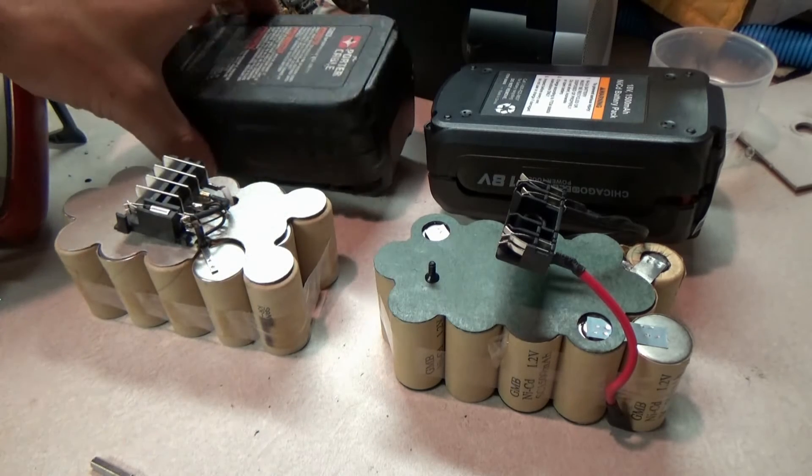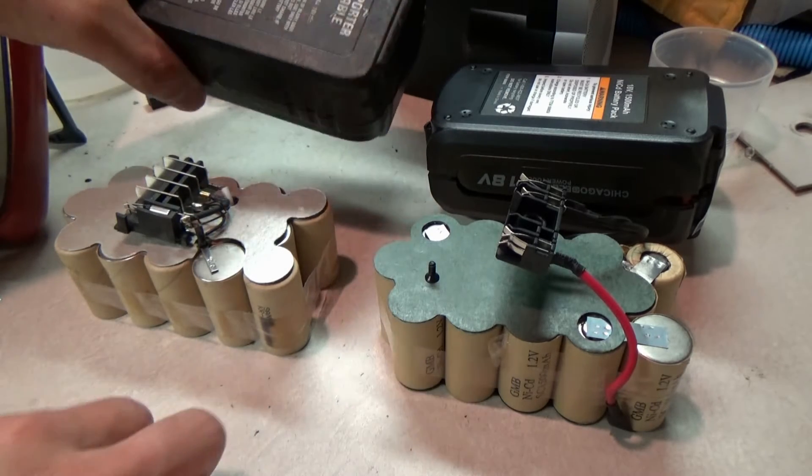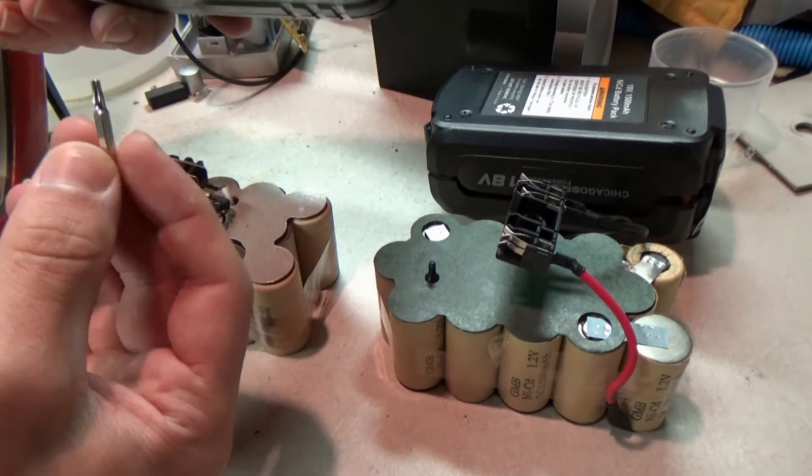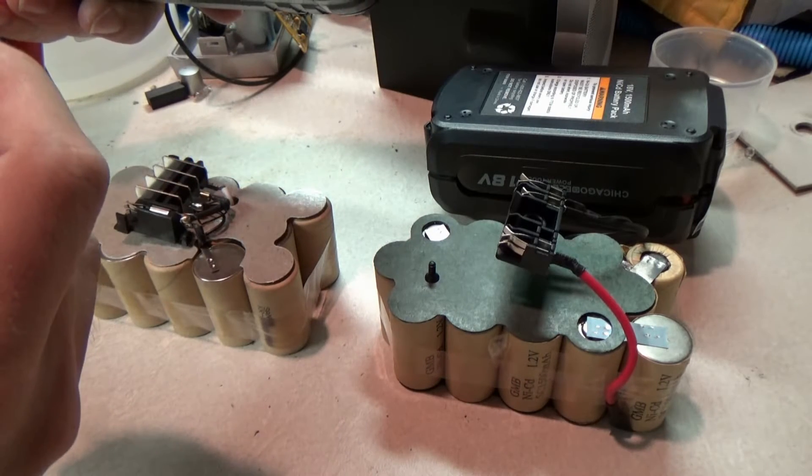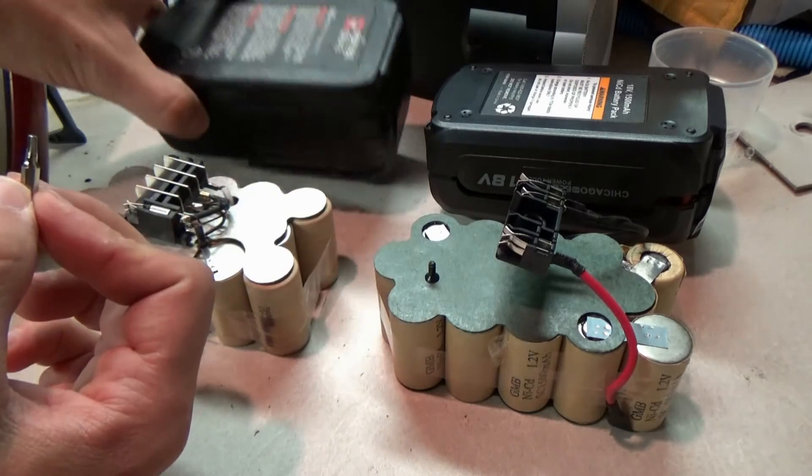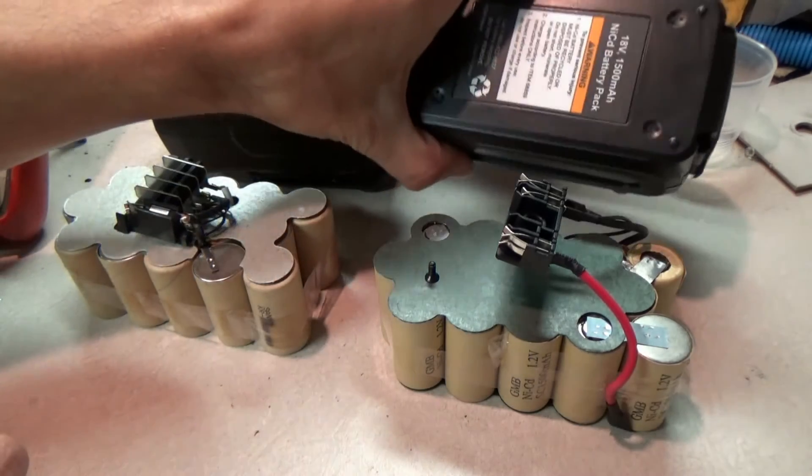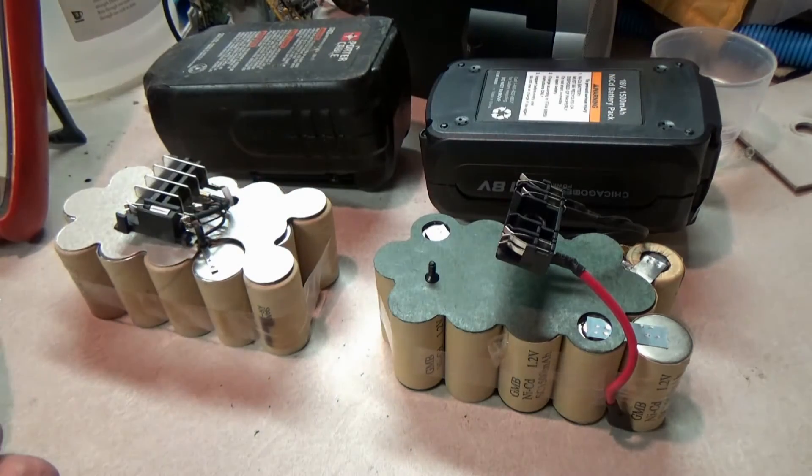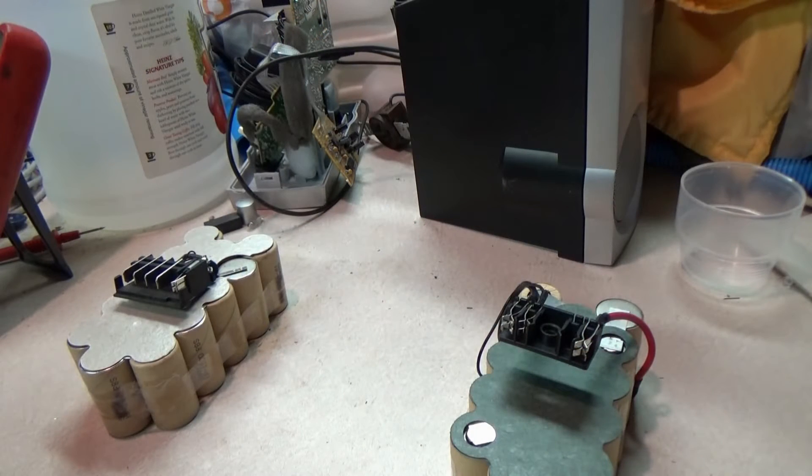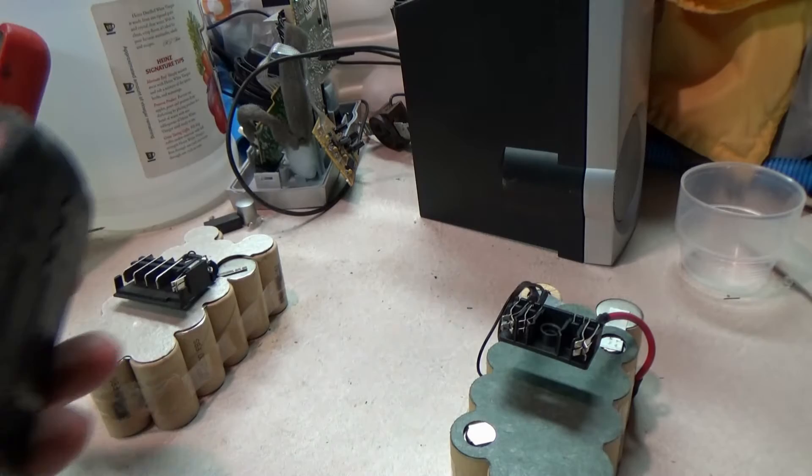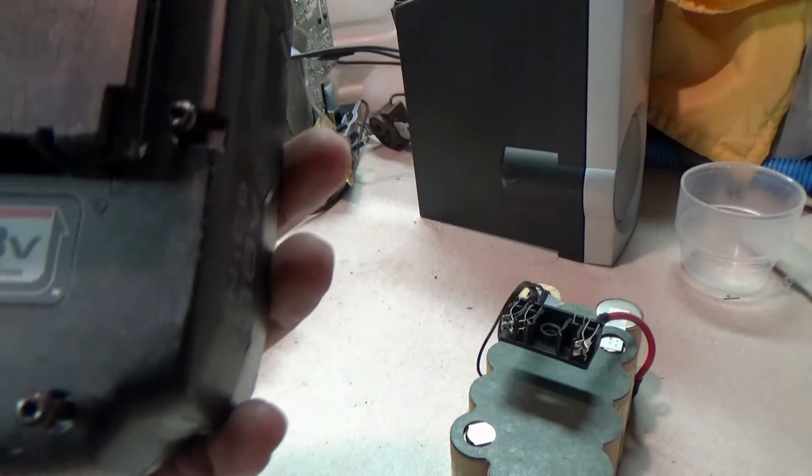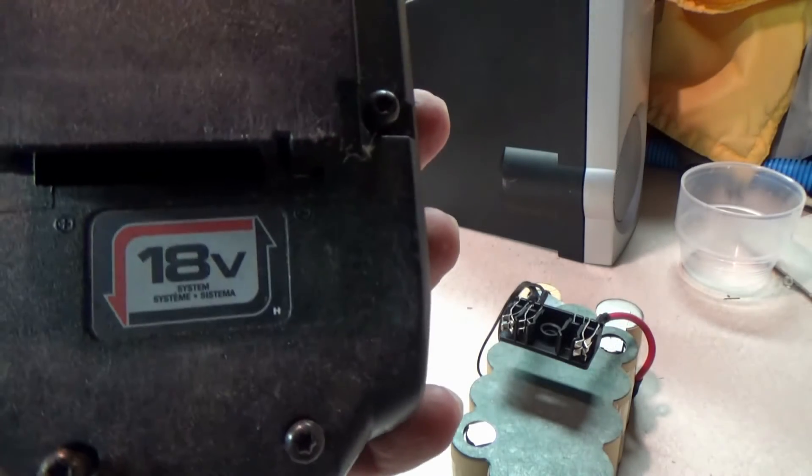Obvious note: you're going to want to disassemble these battery packs before you get into it. Porter Cable uses a bunch of these T10 Torx screws. Chicago Electric: four Phillips screws. Again, nothing too crazy. And in a completely semi-related side note on the battery pack...